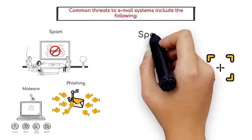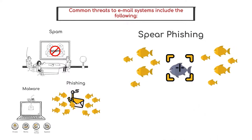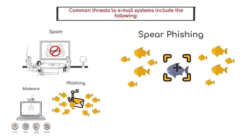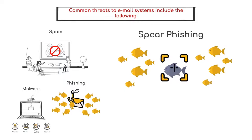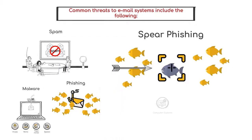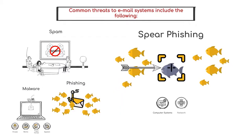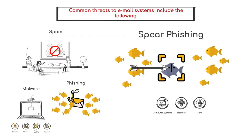Spear phishing is a highly specialized phishing attack that targets a specific individual or small group of individuals to collect information in order to gain access to computer systems, networks, and data.